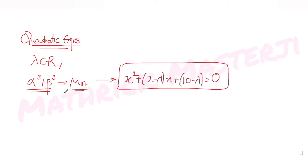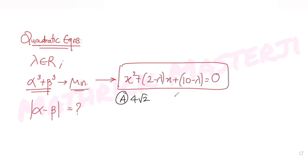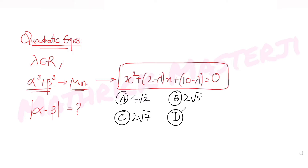Then the question asks us to find the magnitude of the difference of the roots, that is |α - β|. We just need to find the absolute value of α - β. The answer choices are: 4√2, 2√5, 2√7, and 20. We need to figure out which one is correct.